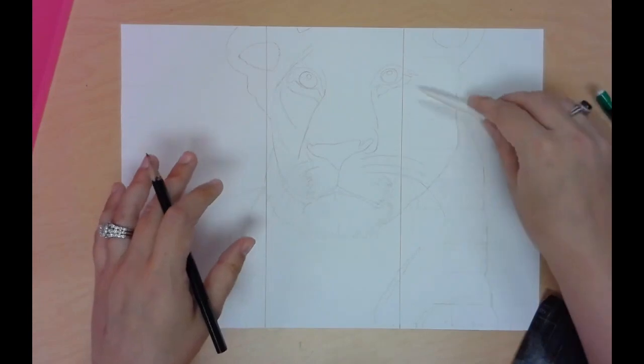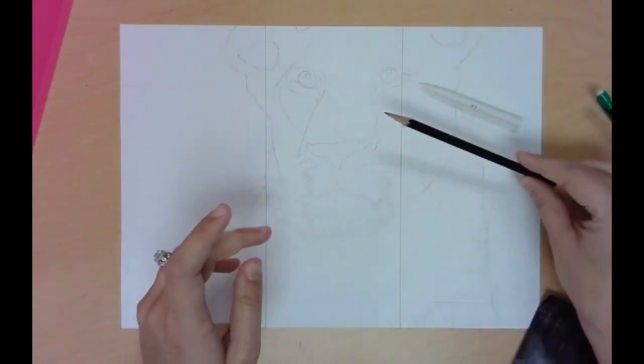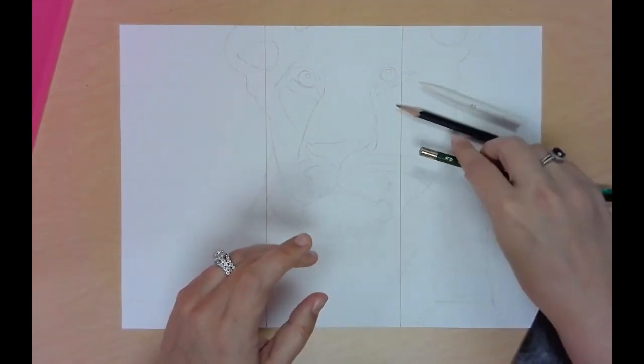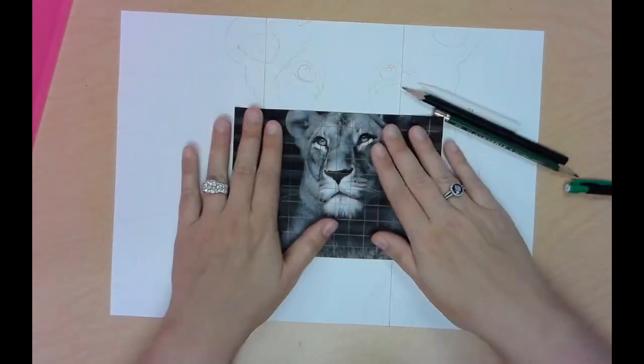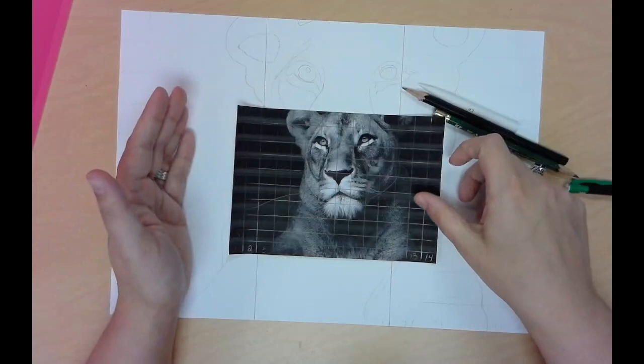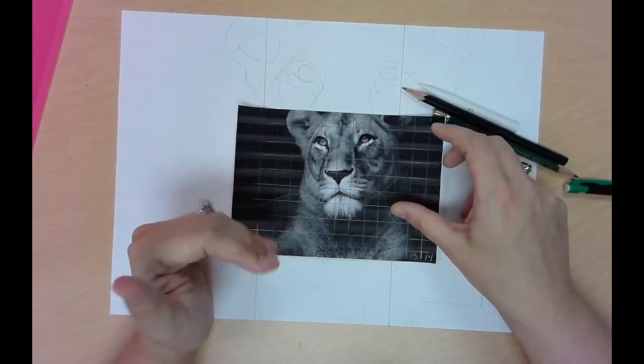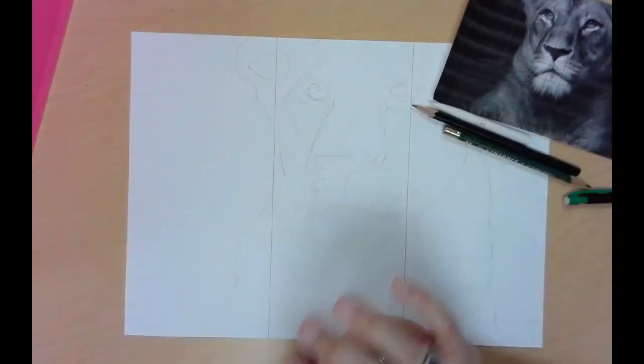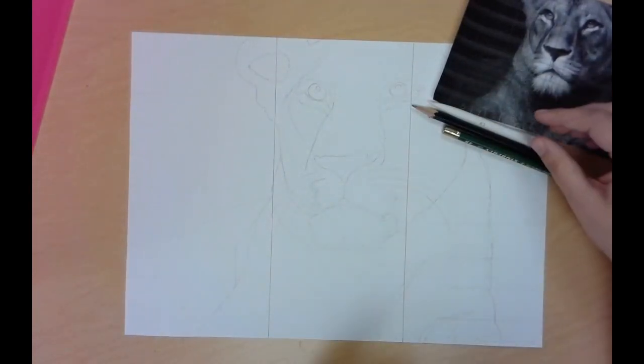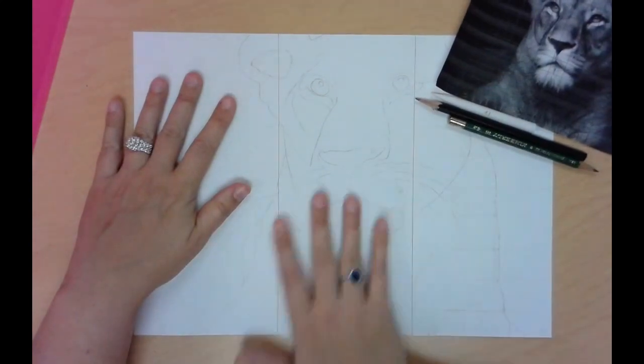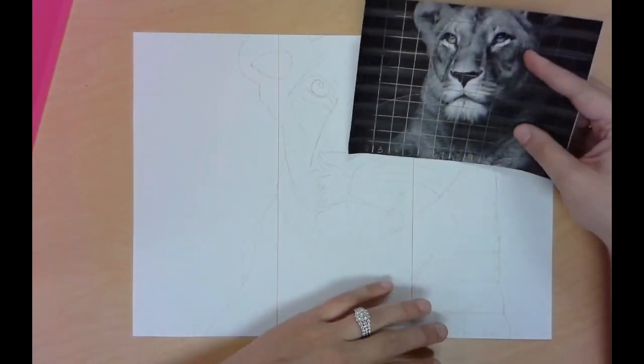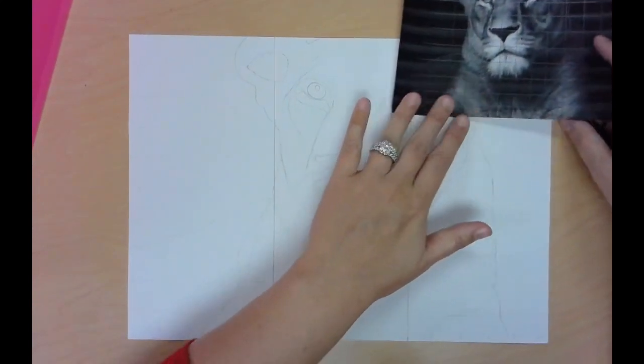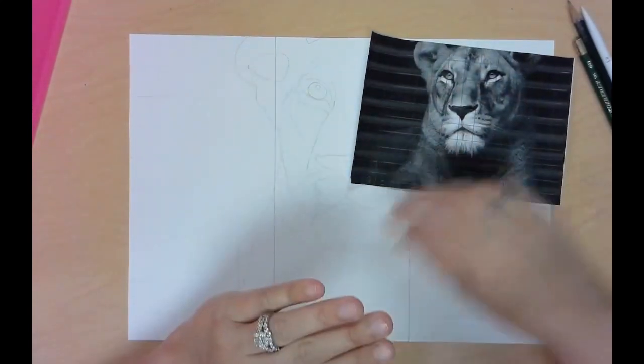So you're going to need your blending stump, you're going to need your 2H pencil, and you're going to need your 4B pencil. And now what we have to do is we have to use our photo, and we have to go back, and we have to make this as realistic as we can. So we're going to have to be using a lot of value with shading and then just getting in those finer lines. What I like to do is I like to map out where the lightest areas are and then go around those.